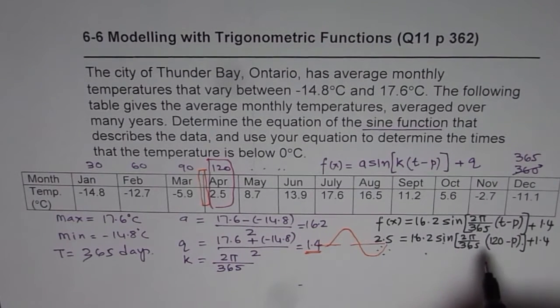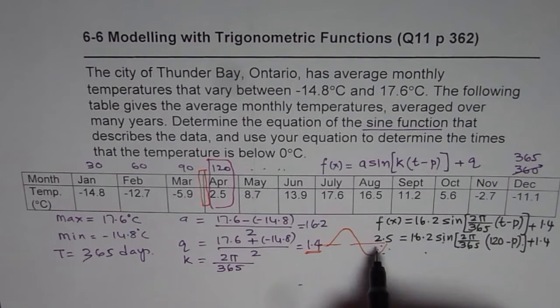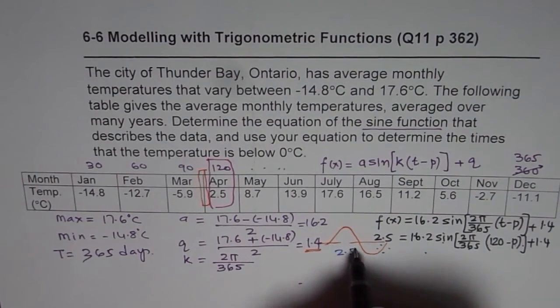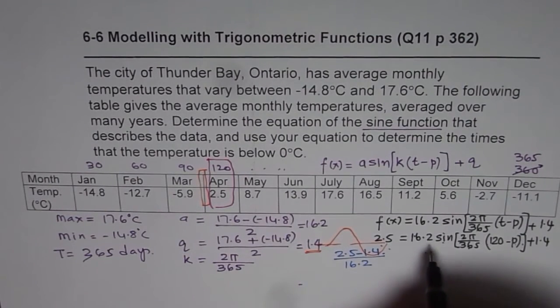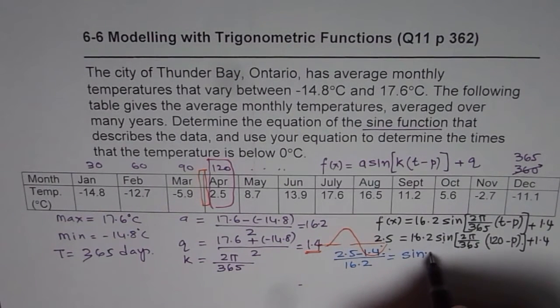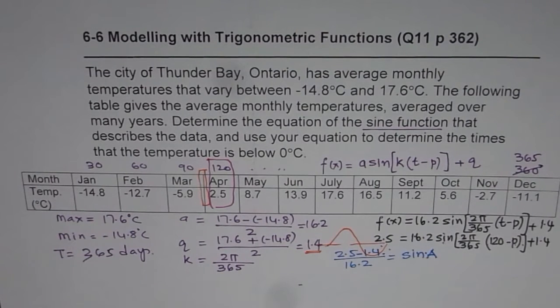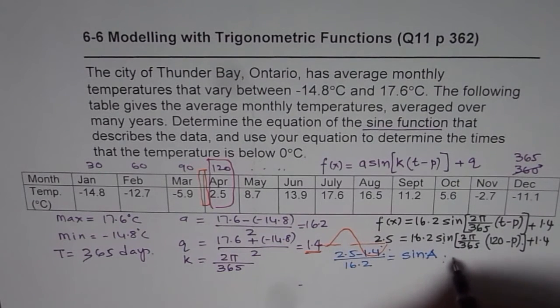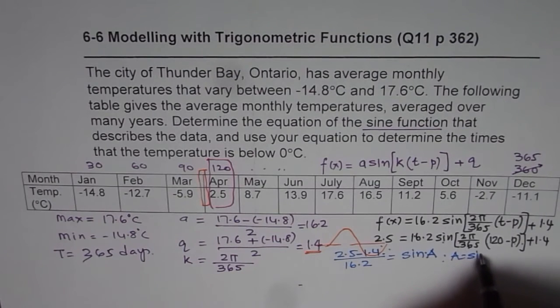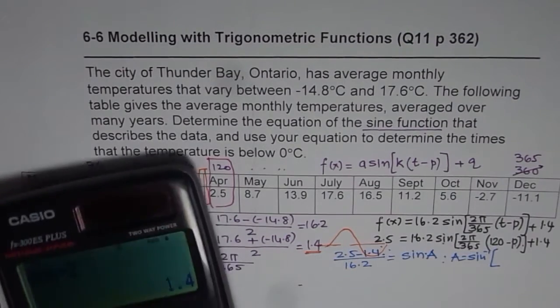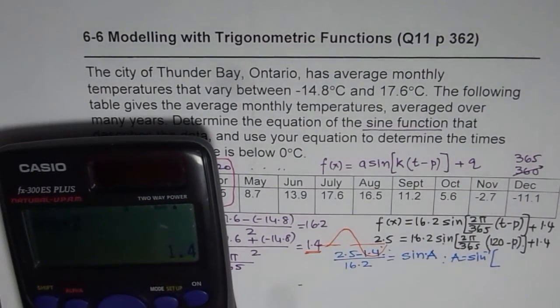Now here are simple calculations which I will try to do. So we are bringing 1.4 here, so we get 2.5 minus 1.4, dividing by 16.2. Then whatever we get is really sine of all this. So let me write this as sine of some value a. Now the next step is, do sine inverse. And when you do sine inverse, you get a. So a is actually sine inverse of all this.